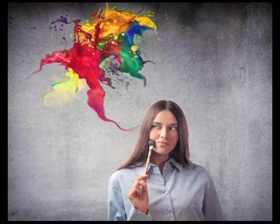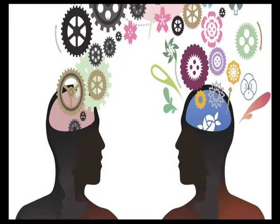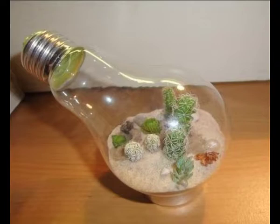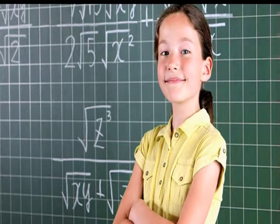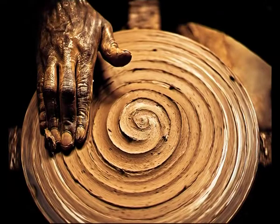In creativity, intelligence plays a very important role. One can't create anything without being associated with intelligence. It's the process of producing something original and worthwhile. According to J.P. Guilford, a renowned psychologist, creativity involves divergent thinking with respect to the traits of fluency, flexibility, and originality of thought process. Intelligence certainly plays a part in creative thinking — it demonstrates the ability to gather information and effectively use it. Creativity is the ability to go beyond the intelligence frame and capitalize on seeing random connections of concepts.